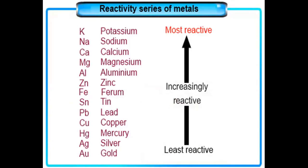This table shows the reactivity series of metals with examples including potassium, sodium, calcium, magnesium, aluminium, zinc, iron, tin, lead, copper, mercury, silver, and gold. The topmost metals are most reactive, metals at the bottom are least reactive, and metals in the middle are moderately reactive. Proceeding from top to bottom, reactivity decreases; proceeding from bottom to top, reactivity increases.